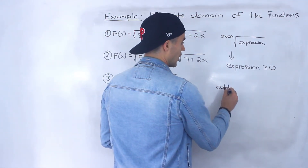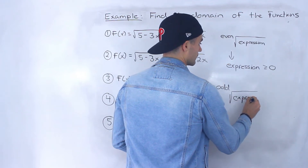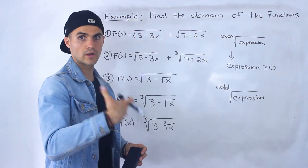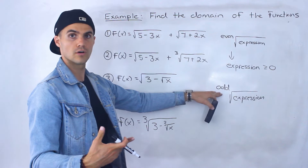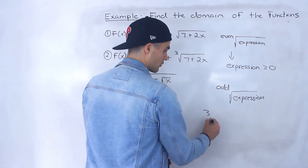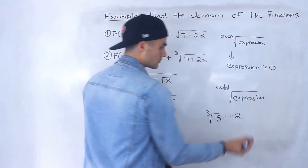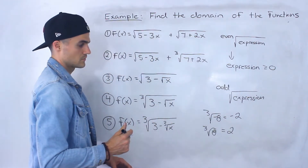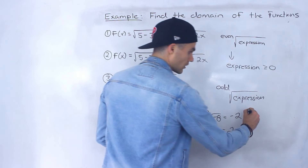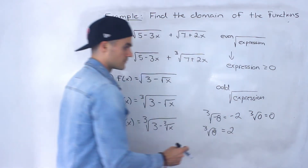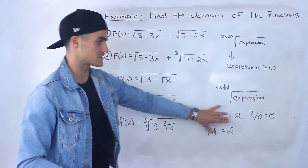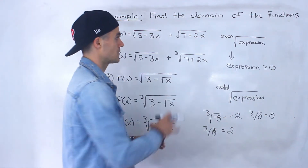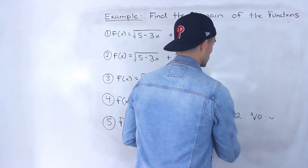However, if you have an odd root of an expression, then that expression can be anything — it could be negative, zero, or positive — because you can take the odd root of a negative number. For example, the third root of negative eight equals negative two, the third root of positive eight equals positive two, and the third root of zero is just zero. So you can take an odd root of a negative, positive, or zero, but an even root only of a positive number or zero. Just want to mention that before getting into these problems.